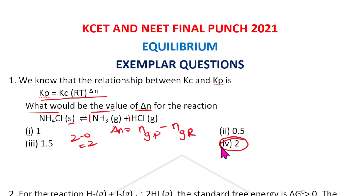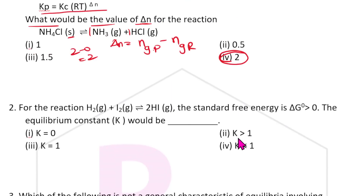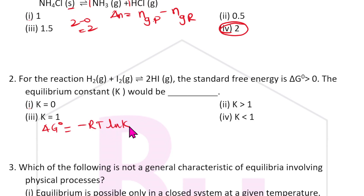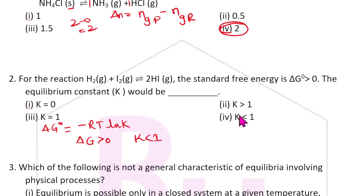For the reaction H₂ + I₂ → 2HI, the standard free energy change ΔG° = 0. What will the equilibrium constant K be? Using the formula ΔG° = −RT ln K, if ΔG° = 0, then applying the formula, K will be less than one. So the answer for this question is option D — K is less than one.